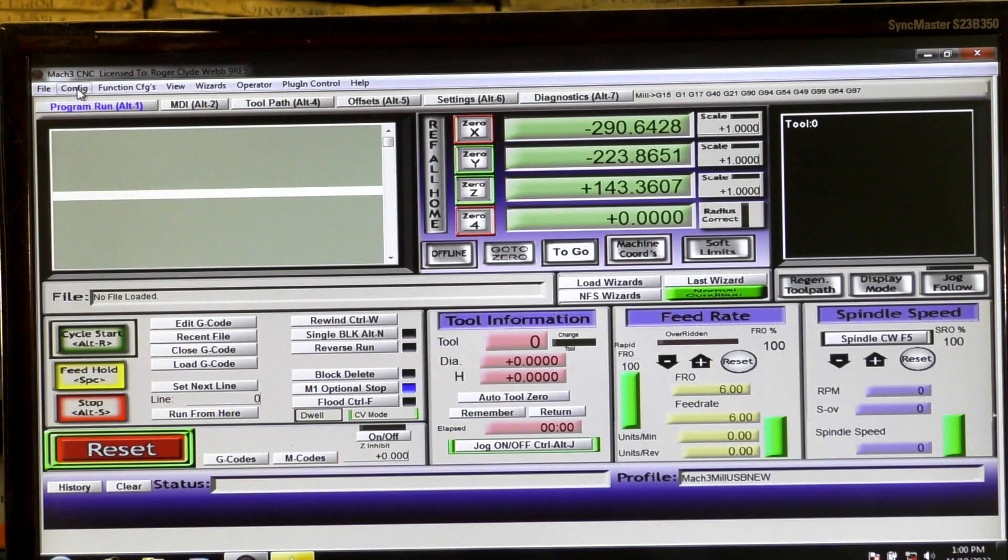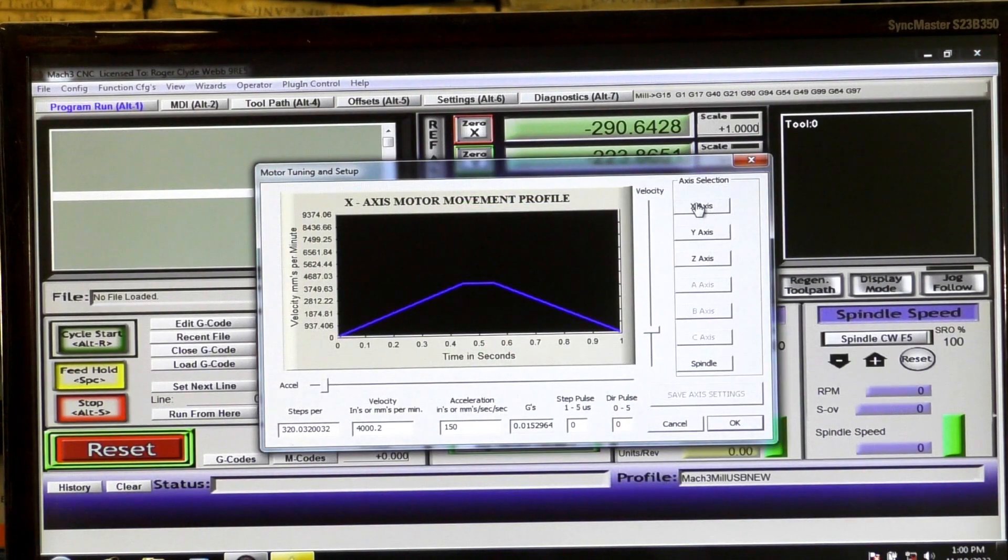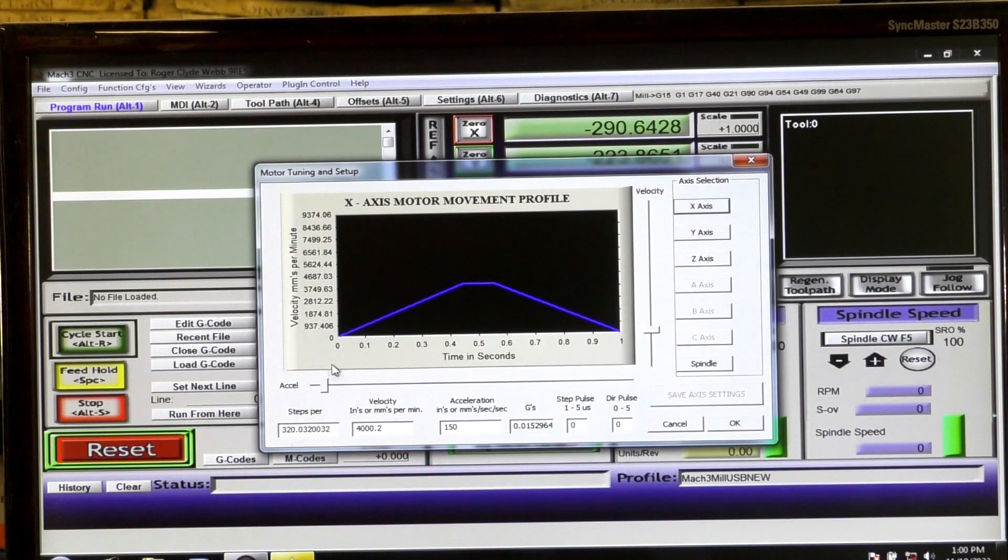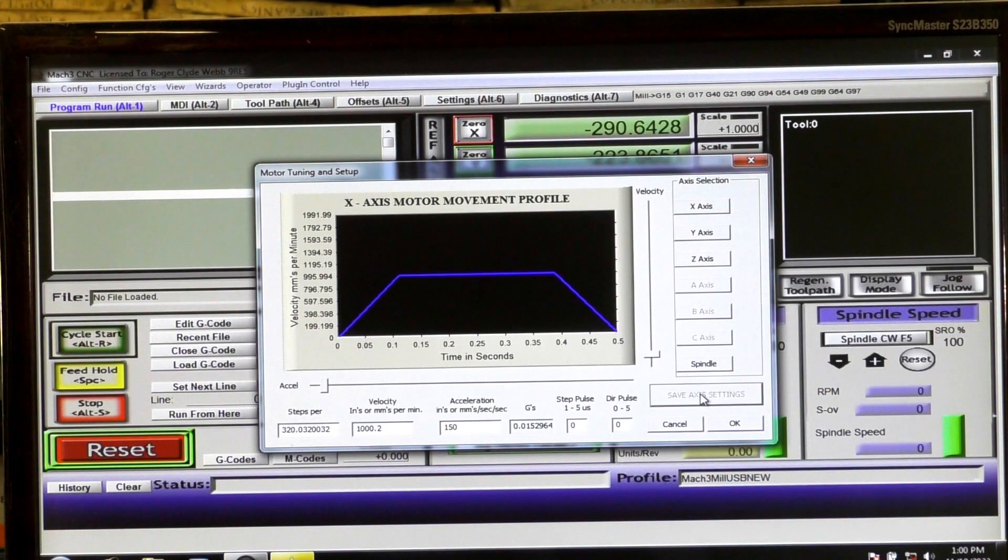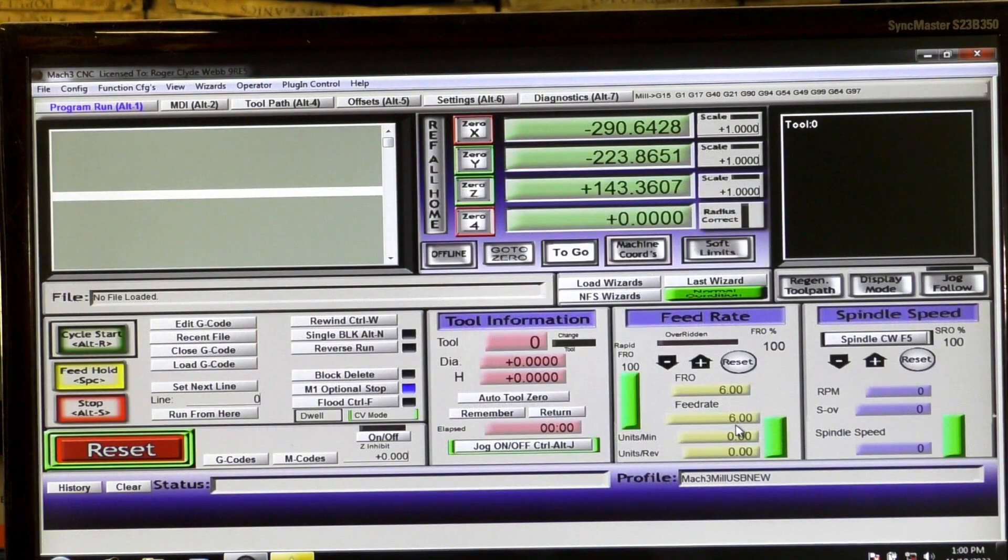Okay, so again you go into config, motor tuning, select the axes that you want to change. We're doing the X. Now, velocity. That's the only one you need to change. I'm going to drop that down to 1000, press save axes settings, press OK, and I'll show you the result of that.